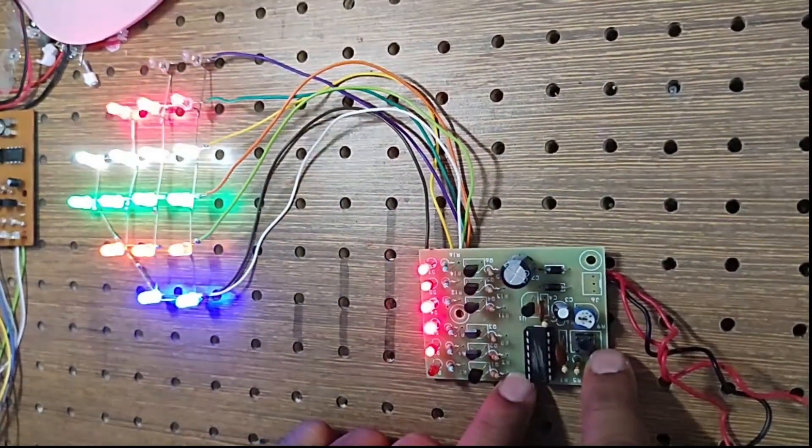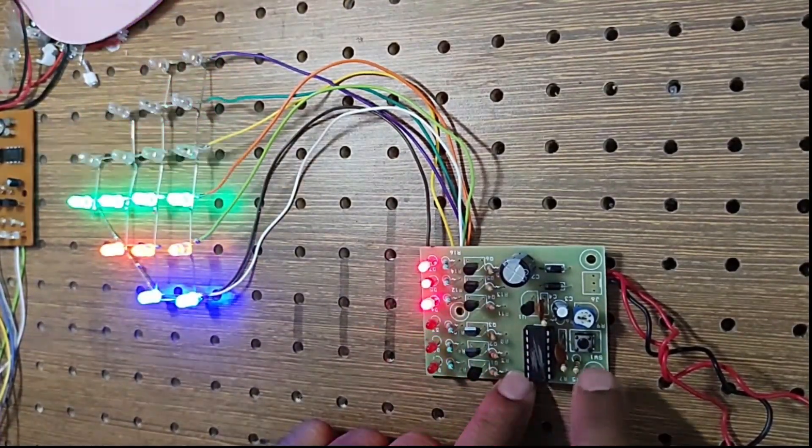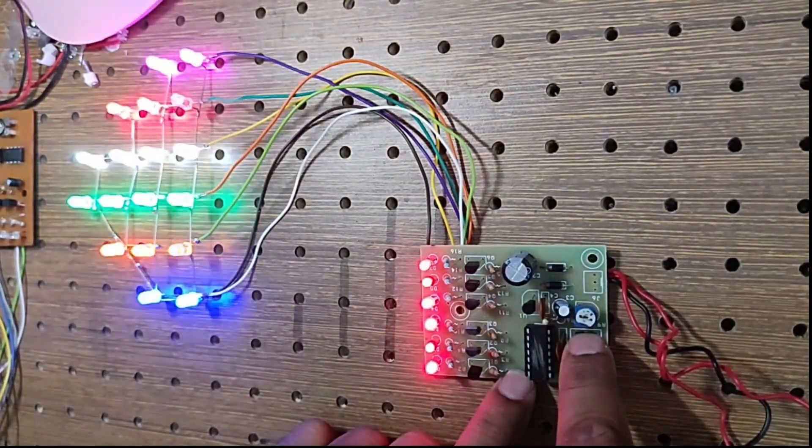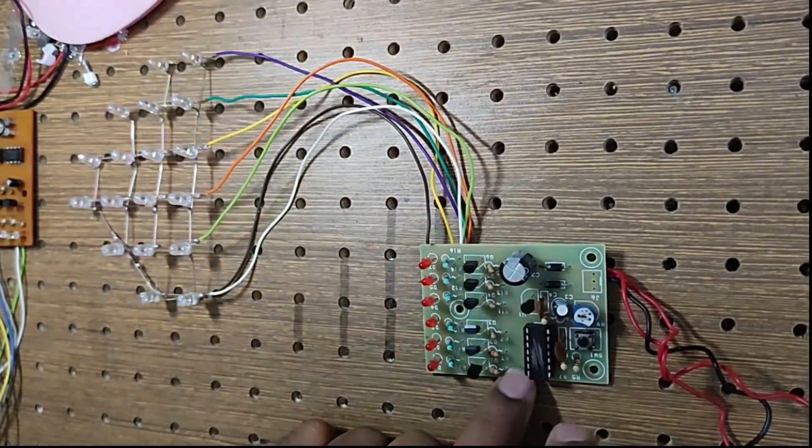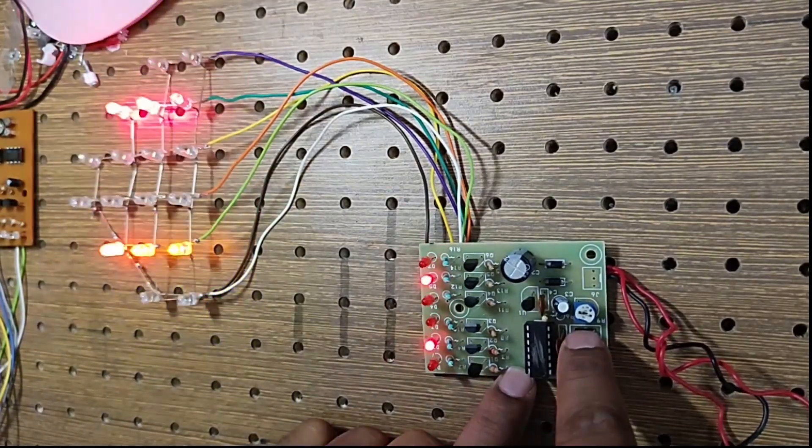But the advantage in the PIC microcontroller is we can change the output mode. There is one interrupt switch. By giving a high input interrupt to the microcontroller, we can change the output. The sequence is changing. You can see how the LEDs are changing the sequence.